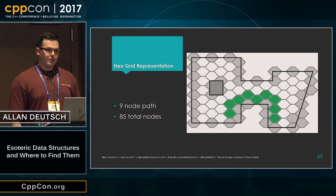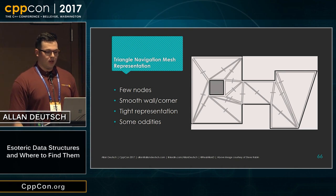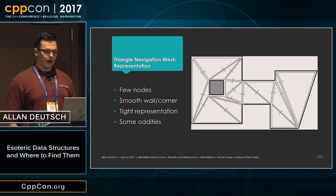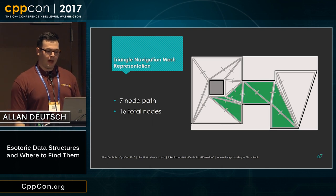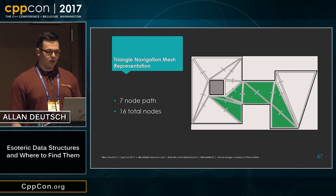I still think we can do better. Let's look at what a nav mesh can do. This is a triangle-based nav mesh, so all of the nodes in this graph are triangles. As you can see, it uses a lot less nodes than any of the previous representations, it smoothly handles the walls and corners, and it's a pretty tight representation of the search space — but there are some oddities like thin skewed triangles that don't do a lot. Our path this time is seven nodes, which is only a couple less than before, but that's also one of the worst cases for this particular map's triangle representation. The 16 total nodes is a lot better, so in your worst-case search you'll come out a lot further ahead.